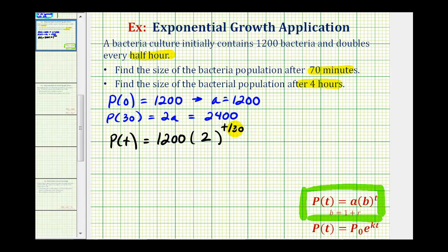Again, notice when t is 30, we would have 1,200 times two to the first power, or times two, which would give us 2,400. So this is the exponential function that we can use to answer the two questions, where again, t equals the number of minutes.